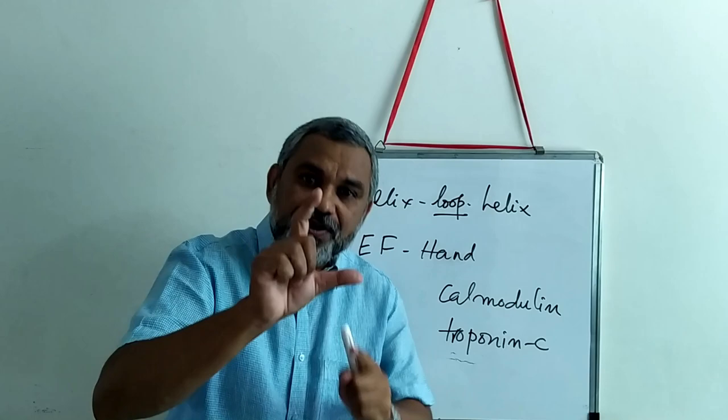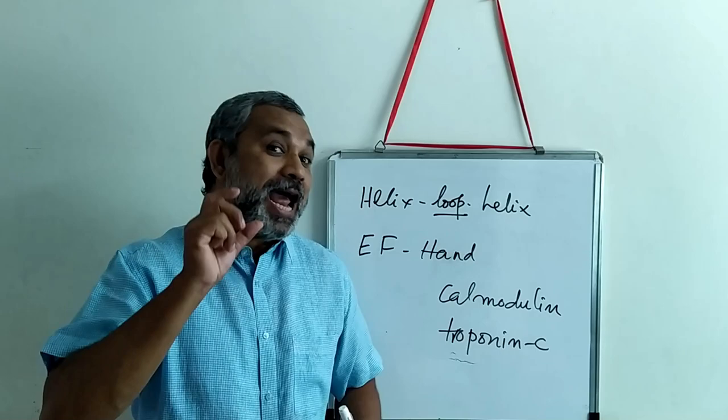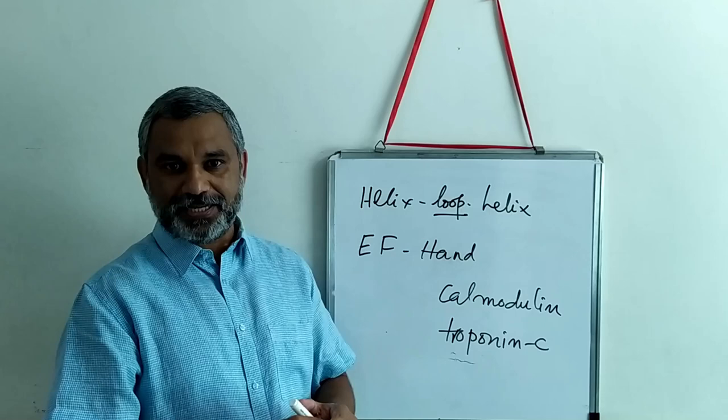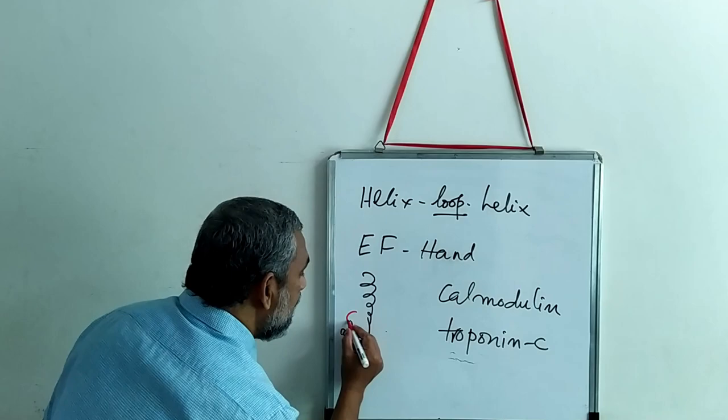In the long loop structure you find amino acids like two aspartic acids, one glutamic acid, and one asparagine. These amino acids, along with the backbone of the helices and the carbonyl carbon, are capable of binding to calcium. One helix is here and another helix is on the other side; a loop is formed between them and in this loop calcium ions can be bound.